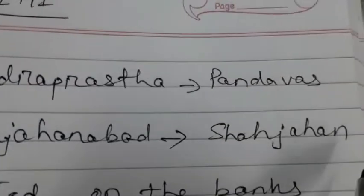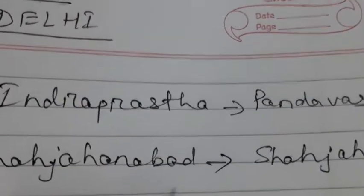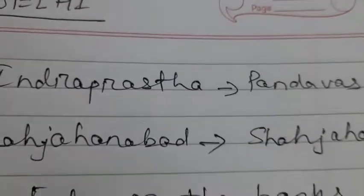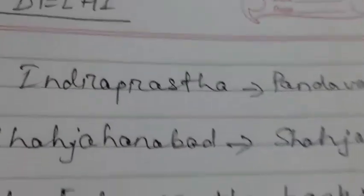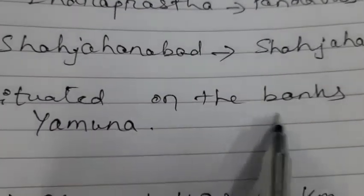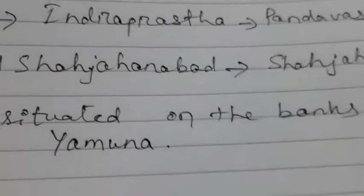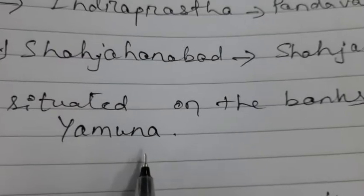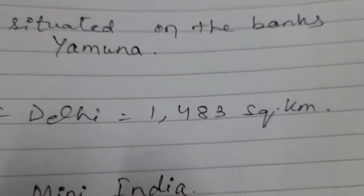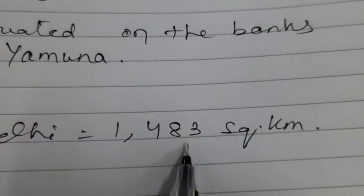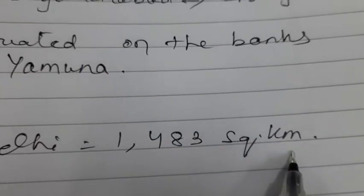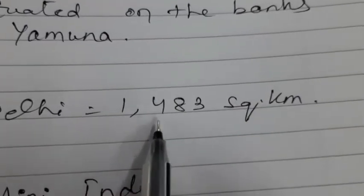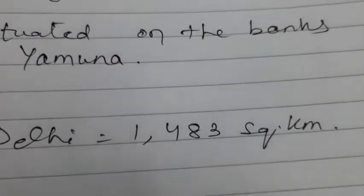According to his name Shahjahan, it was known as Shahjahanabad. Now we will discuss about its location. Delhi is situated on the banks of river Yamuna. The area of Delhi is 1,483 square kilometers.